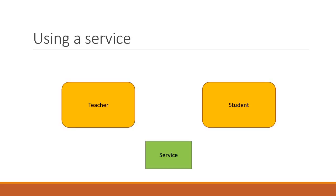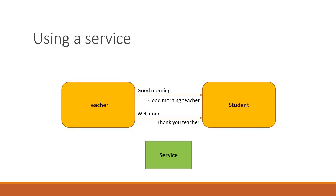The teacher component wants to send a message to the student component. For example, the teacher wants to wish good morning. When the message is received by the student, the student responds with good morning teacher. Similarly, if the teacher appreciates the student by sending a message well done, the student responds with thank you teacher. This is the component interaction we wish to achieve.